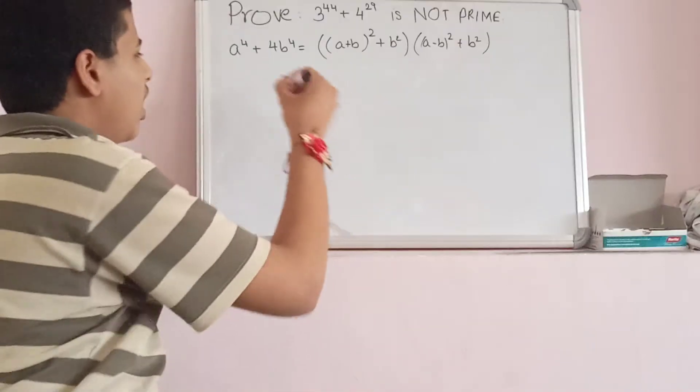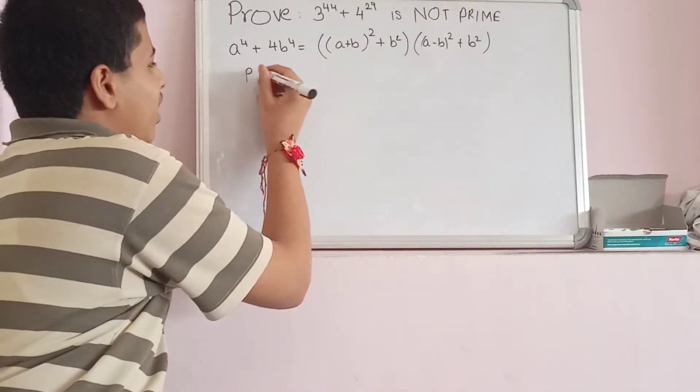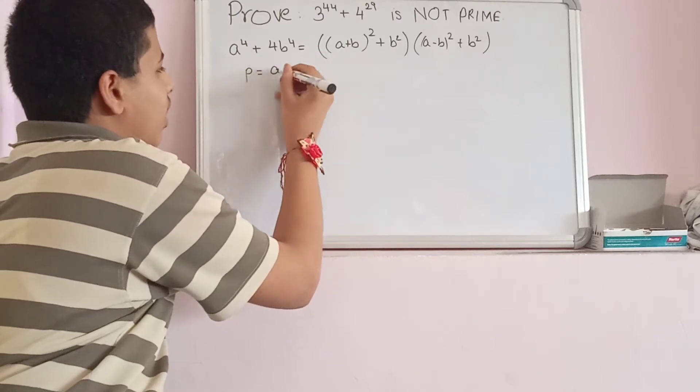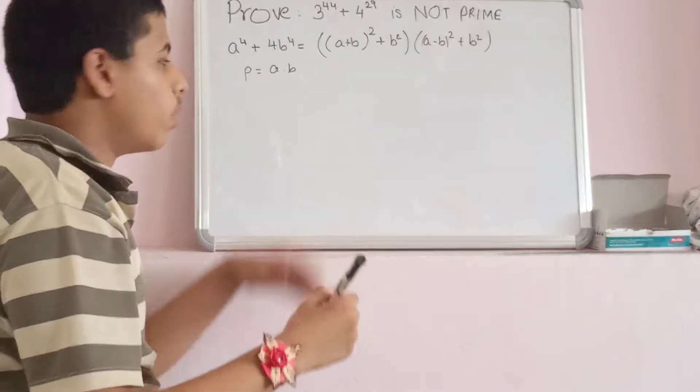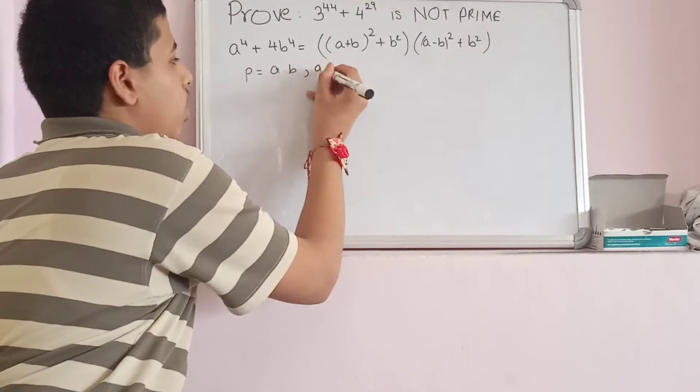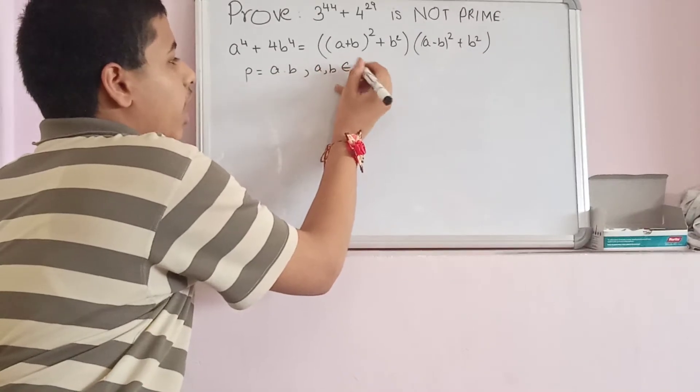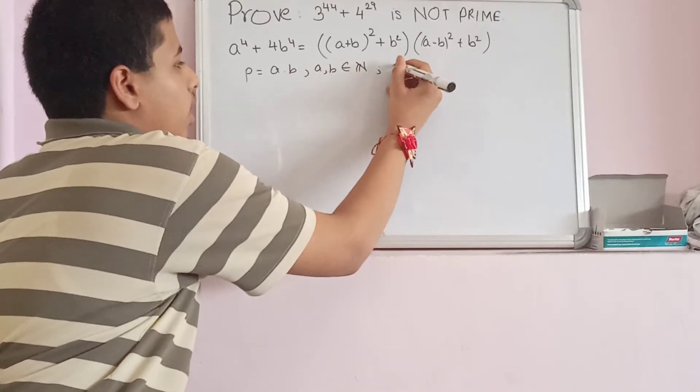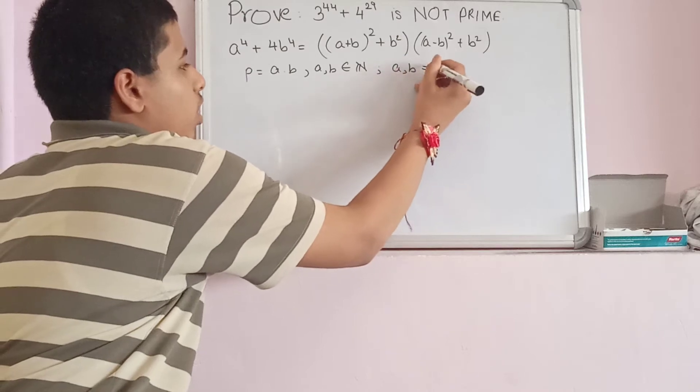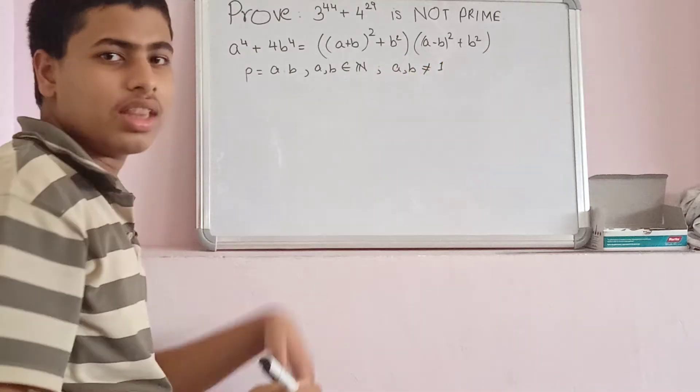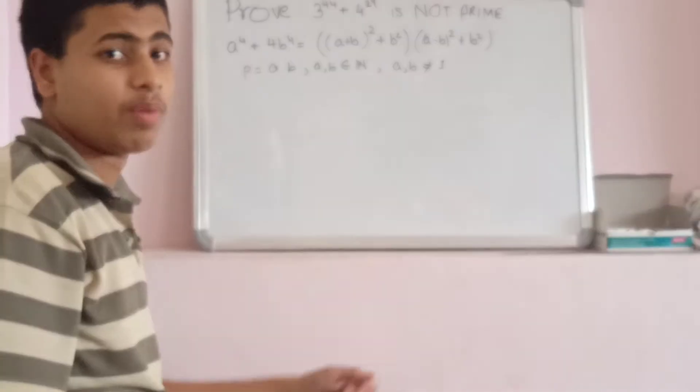When is something not prime? A number is not prime if I can write it as a times b, where a and b belong to the natural numbers, and a and b are not equal to 1. That's what is not a prime number.